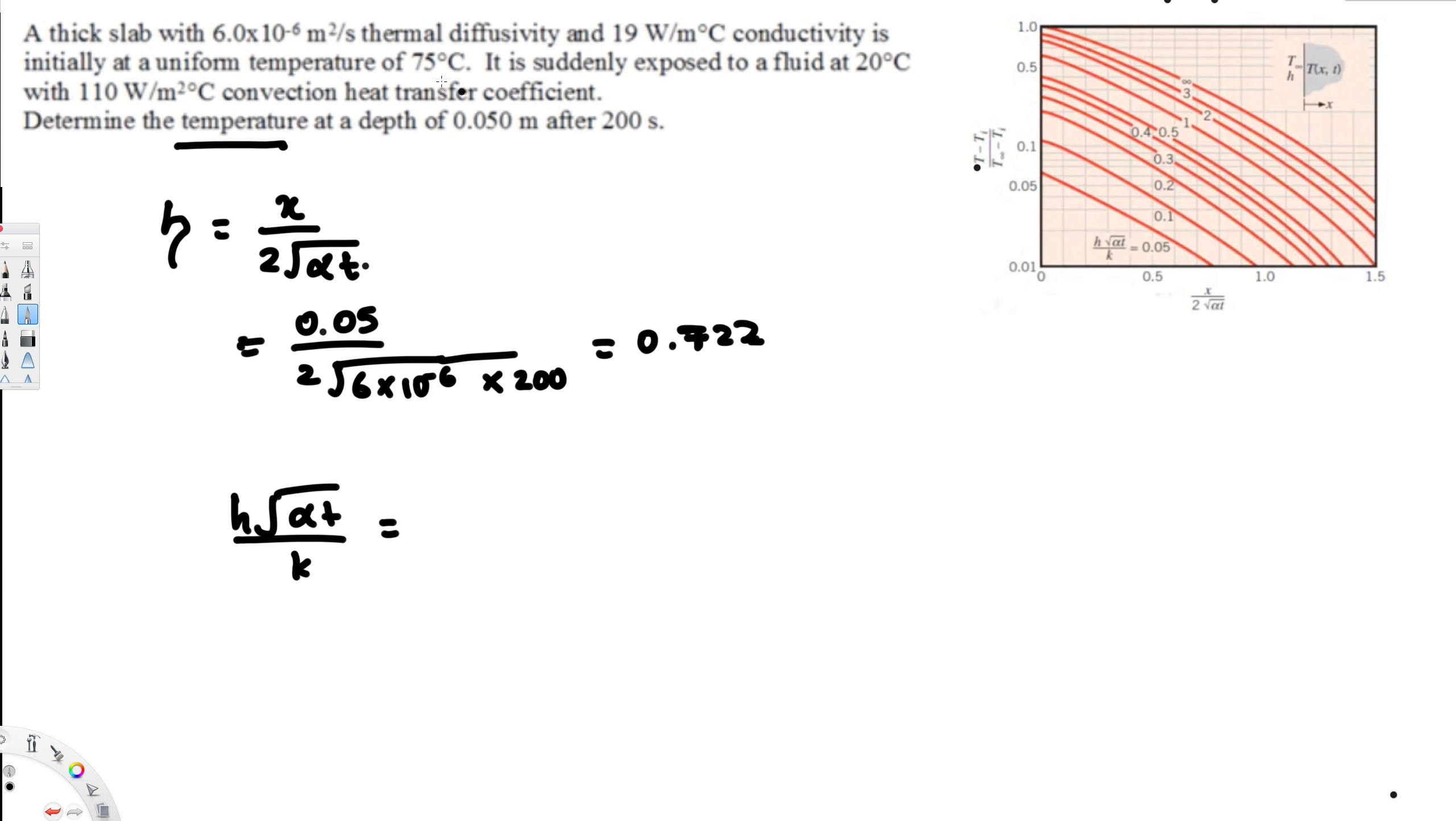H square root of alpha t over k. H is heat transfer coefficient, that's provided right here, 110. And thermal diffusivity, that's again 6 times 10 to the power of minus 6 times time, that's 200, divided by thermal conductivity, that is 19. And if you calculate this one, you should get 0.20.